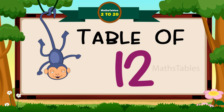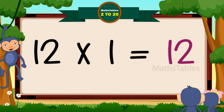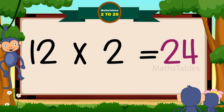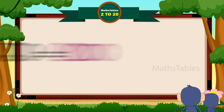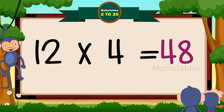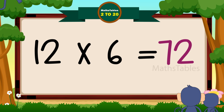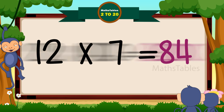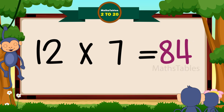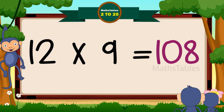Hi friends, now we will learn table of 12. Twelve ones are twelve. 12 twos are twenty-four. 12 threes are thirty-six. 12 fours are forty-eight. 12 fives are sixty. Twelve sixes are seventy-two. Twelve sevens are eighty-four. Twelve eights are ninety-six. Twelve nines are hundred-eight.